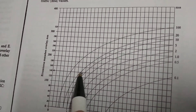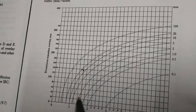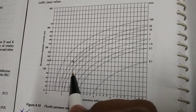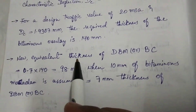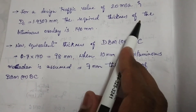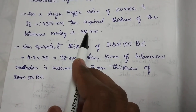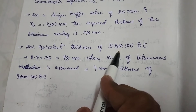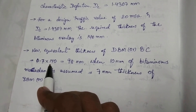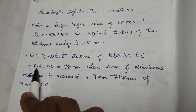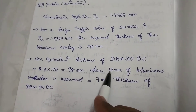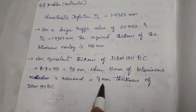From the chart, 1.43 cm characteristic deflection with 20 MSA gives 140 mm bituminous macadam overlay. Therefore, the required thickness of the bituminous overlay is 140 mm. To calculate the thickness of the bituminous macadam specifically, we multiply 140 mm by 0.7, which equals 98 mm.